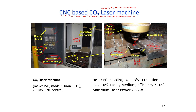The gas combinations for this CO2 laser machine are: CO2 at 10%, helium as the assist gas at 77%, and nitrogen as the excitation gas. The CO2 laser has an efficiency of about 10% and the maximum capacity of this particular machine is 2.5 kilowatts.